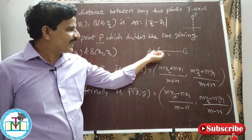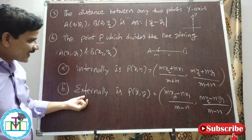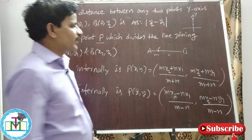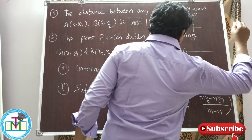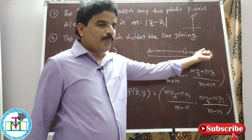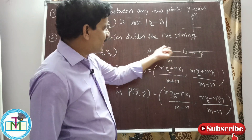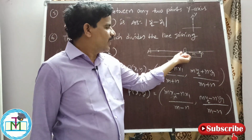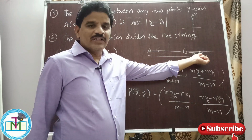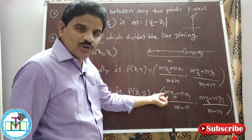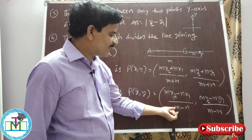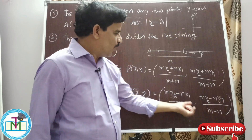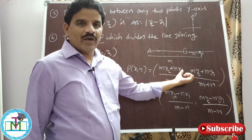Externally means P is outside the segment AB. When P divides the line joining A and B externally, the coordinates are given by: ((mx2 − nx1)/(m − n), (my2 − ny1)/(m − n)). So internally we use plus, and externally we use minus — a very, very important formula.